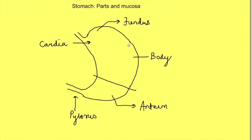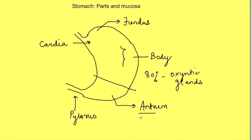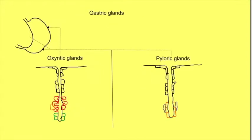The entire stomach mucosa has glands which dip deep into the mucosa. Their opening into the mucosa is known as a pit. The glands in different parts have different cells and secretions, which is why they have different names. 80% of the mucosa up to the body has oxyntic glands, while the rest of the mucosa in the antrum has pyloric glands.